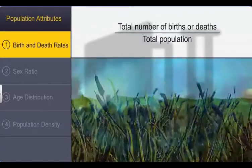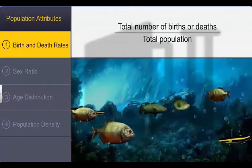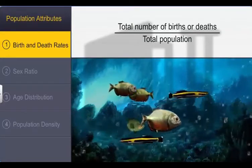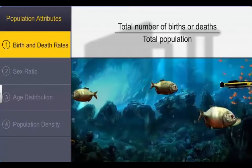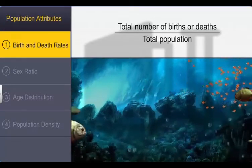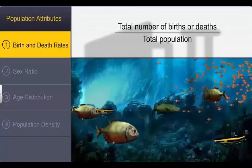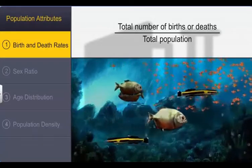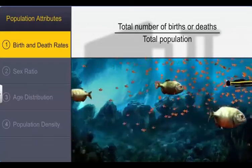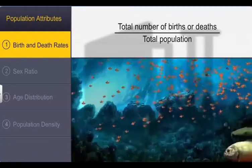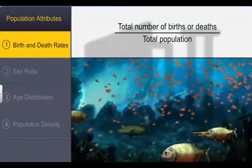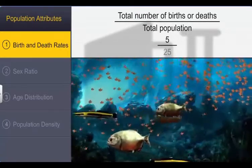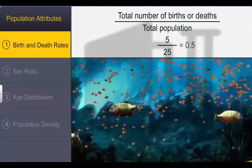To understand death rate, consider a lake with a population of 25 fish, where 5 fish die a week. The death rate is calculated by dividing the total number of deaths by the total population — which is 5 divided by 25, or 0.5 fish per week.